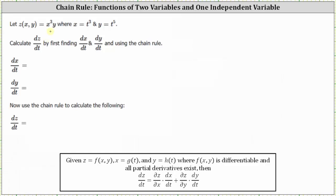We are given z of x comma y equals x cubed y, where x equals t cubed and y equals t to the fifth. We have to calculate dz dt by first finding dx dt and dy dt and using the chain rule. Because x and y are defined in terms of the independent variable t, we need to apply the chain rule to find dz dt, where dz dt is equal to the partial of z with respect to x times dx dt, plus the partial z with respect to y times dy dt.